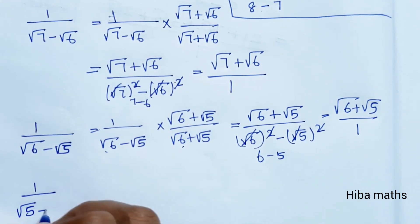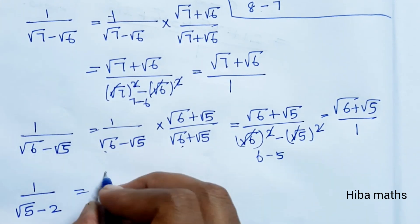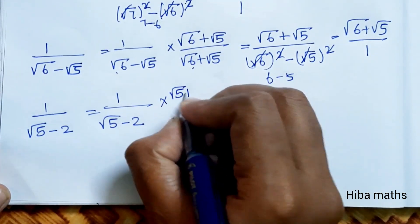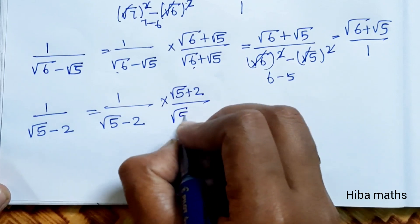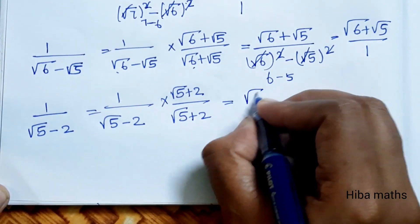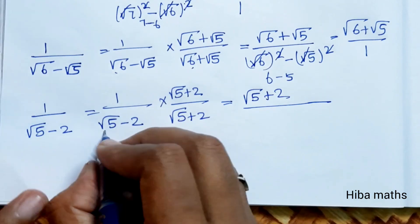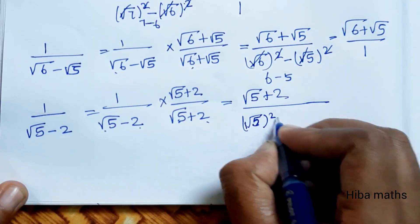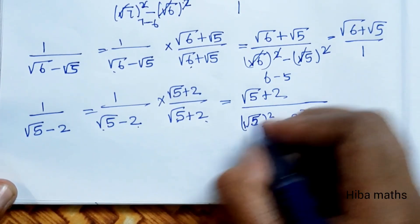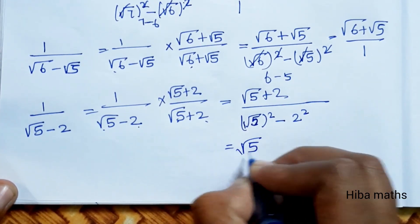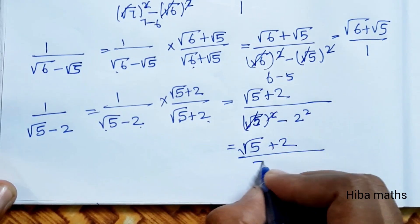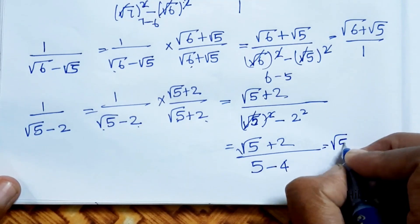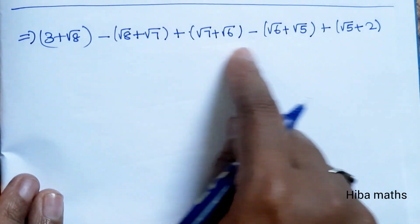For the fifth term, 1/(√5 - 2), multiply by the conjugate (√5 + 2): we get (√5 + 2) divided by (a - b)(a + b) = a² - b², which is (√5)² - 2² = 5 - 4 = 1. So the fifth term simplifies to (√5 + 2)/1 = √5 + 2.